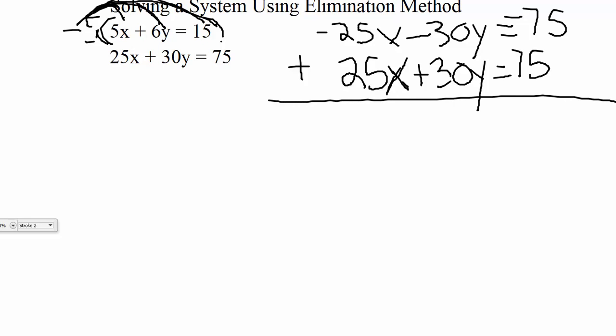So starting with adding our x terms, we have negative 25 plus 25, which cancels. Then we have negative 30y plus 30y, which also cancels. So notice on the left-hand side, we're once again left with 0. We don't have anything left, so that's understood to be 0. On the right-hand side though, we have negative 75 plus 75, which also cancels out, which means on the right-hand side we also get 0.